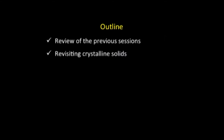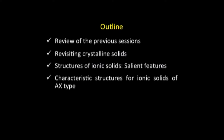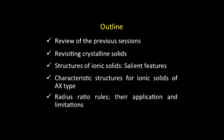The session is planned as follows: to begin with we will briefly review what we did in the previous sessions. Having done that we will revisit crystalline solids, which we learnt about in our lecture series on solid state. We will then come to the main theme of today's session — the structure of ionic solids — beginning with the salient features, then the characteristic structures of AX-type ionic solids, the radius ratio rules, their applications, limitations, and finally a summary.